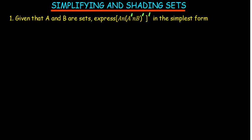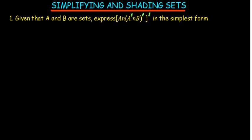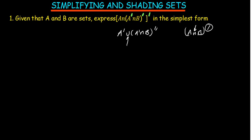So we are going to work this out. First, I am going to distribute the complement which is outside everything. The first part is going to be A complement, and then this changes the sign — it becomes union. The second part is A complement intersection B. There is a complement there, and by De Morgan's law, whenever you distribute a complement over A intersect B, the sign changes.